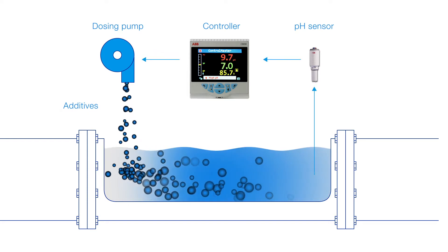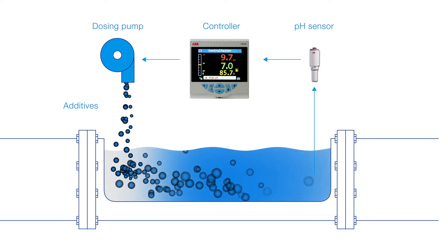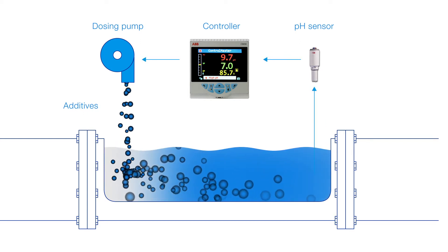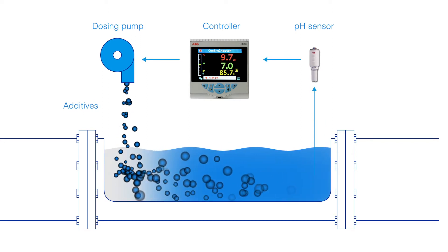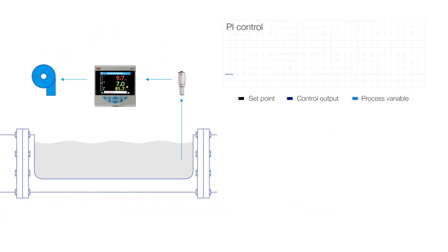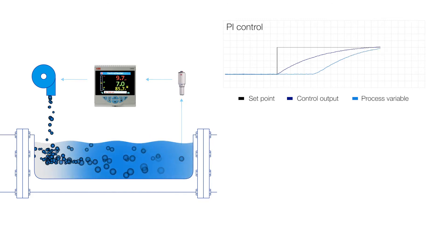The resultant reaction time, or dead time, makes control of additive dosing difficult to achieve, and the use of a standard PI controller typically results in unstable or slow responding control.